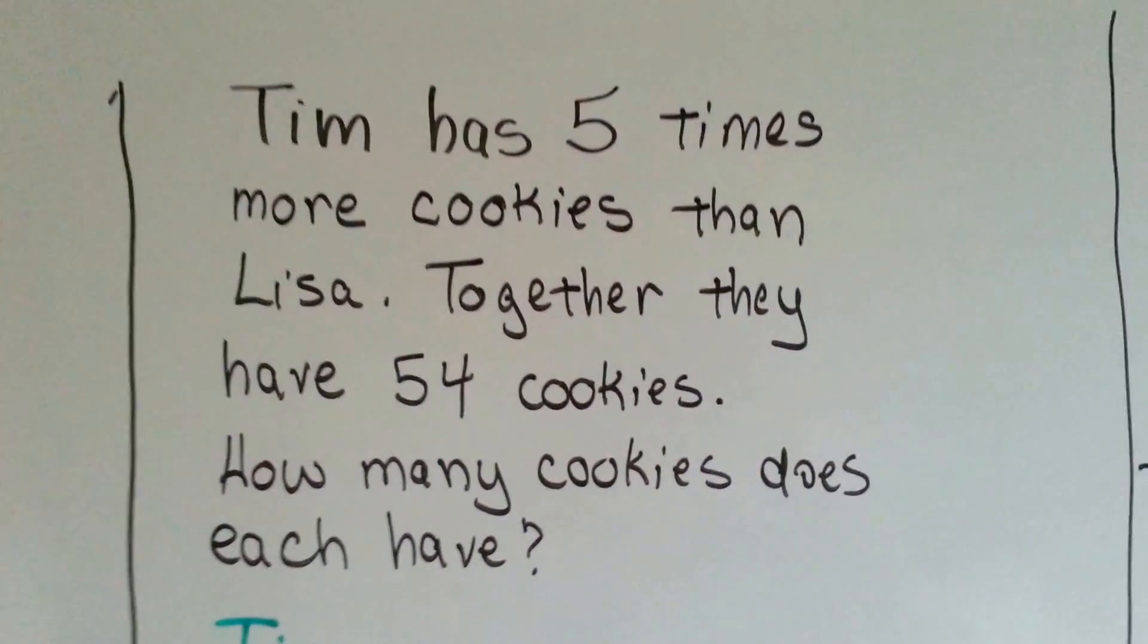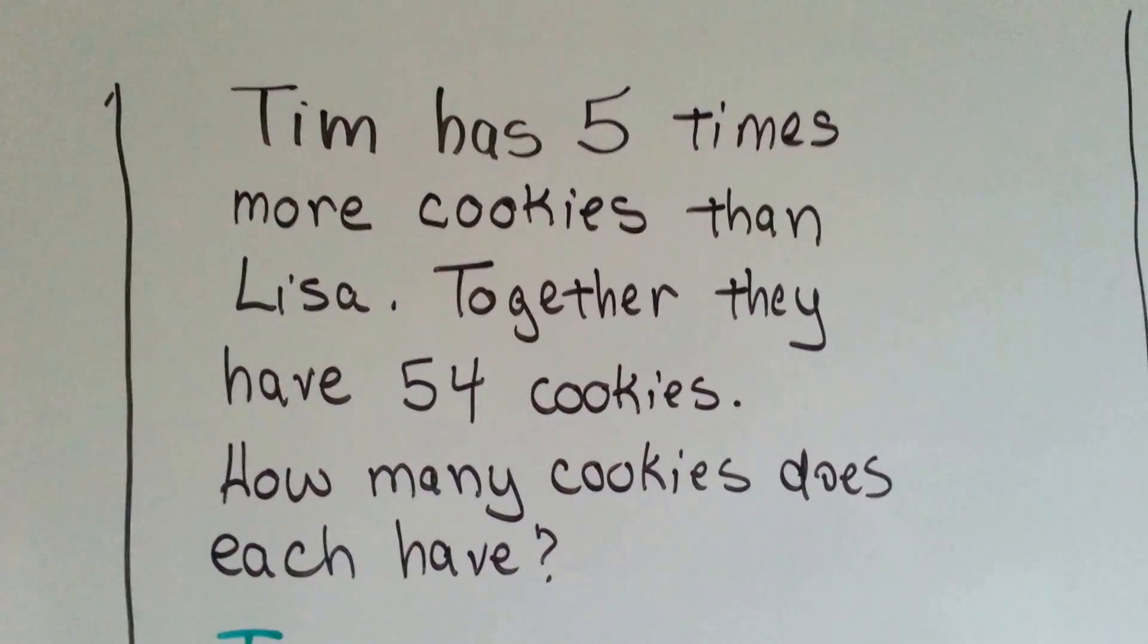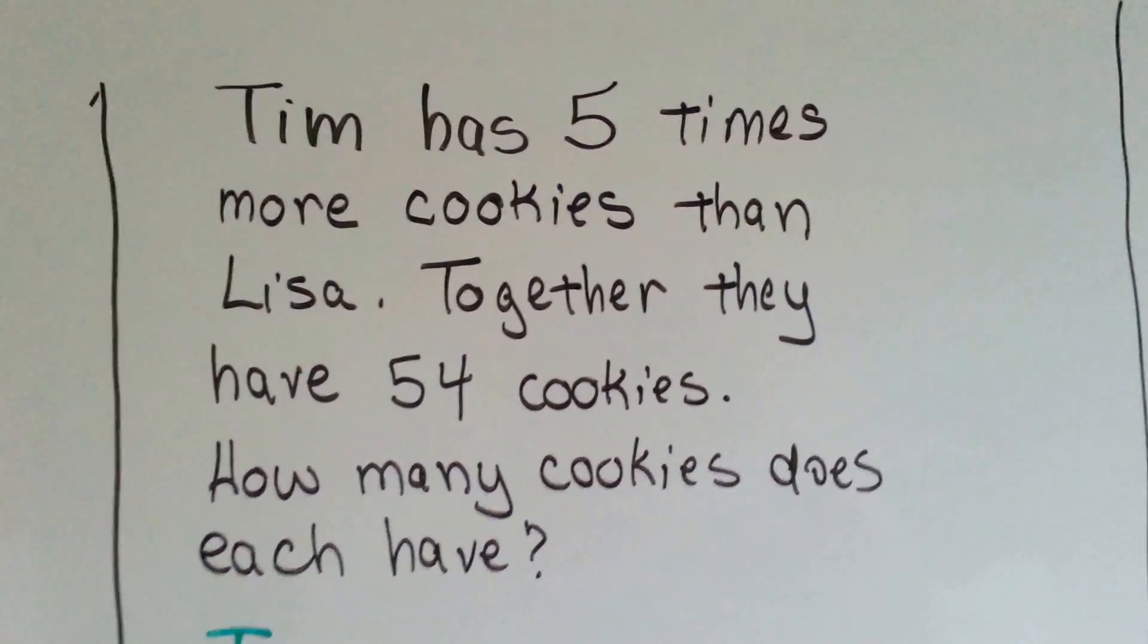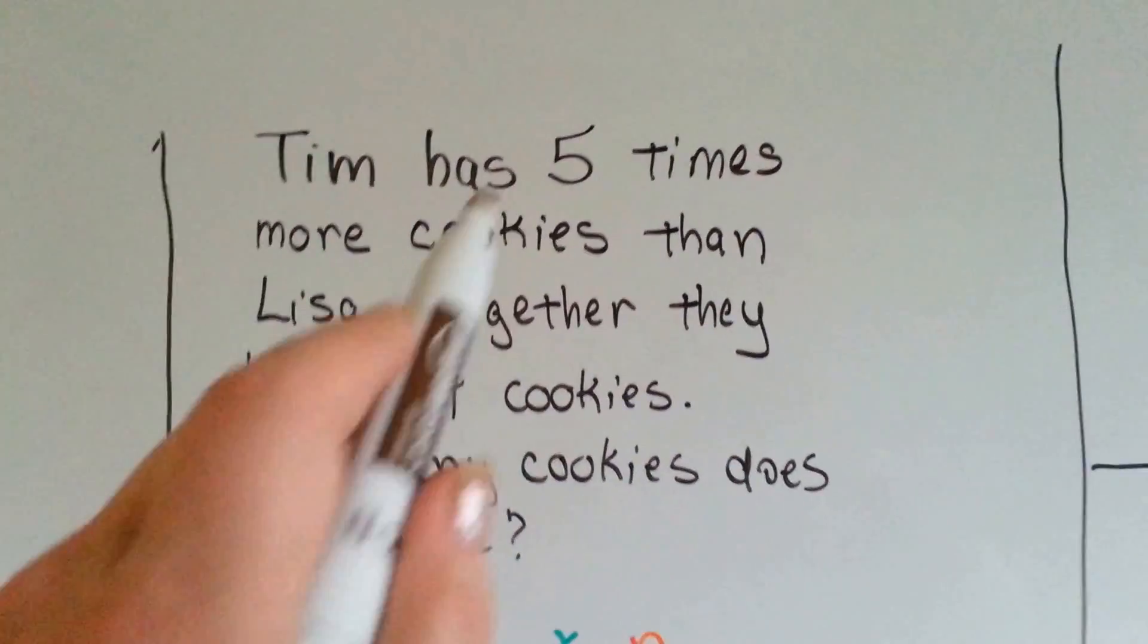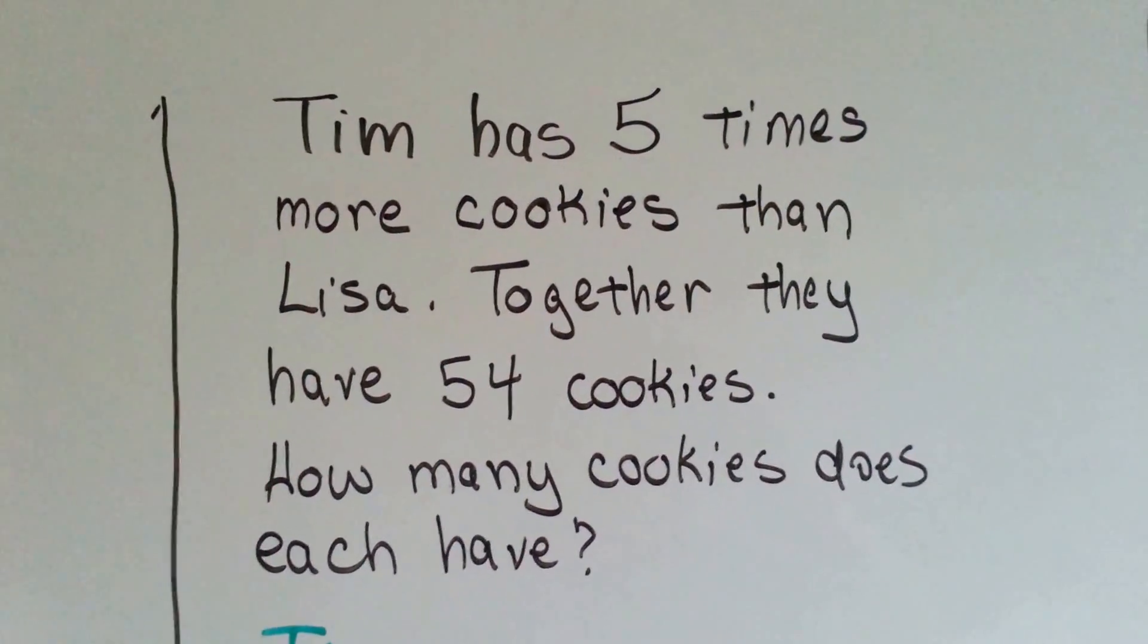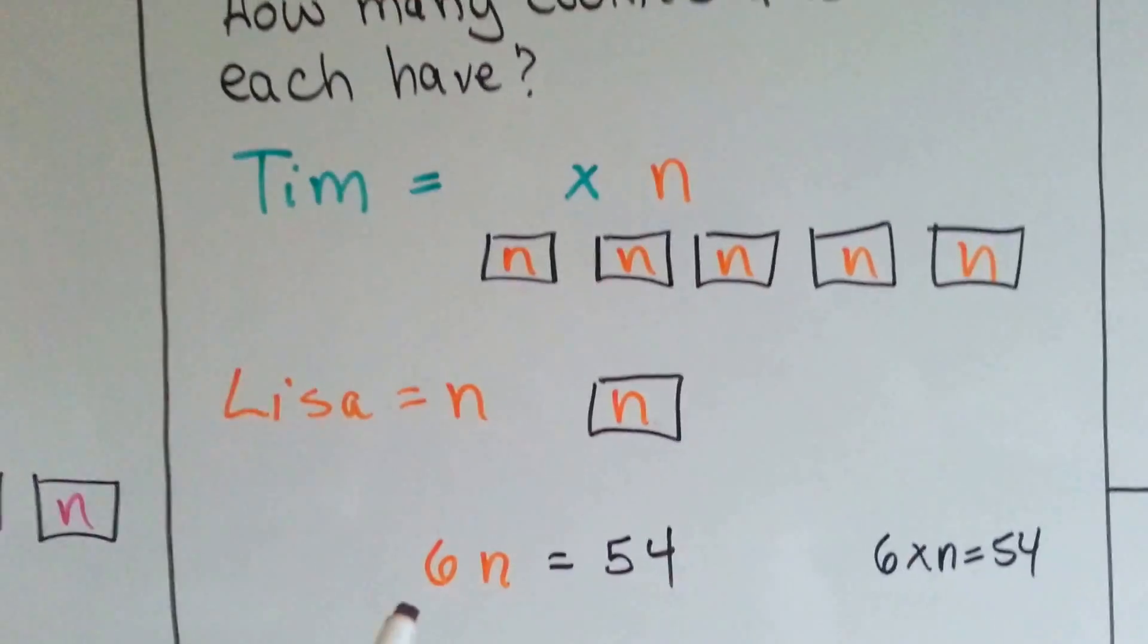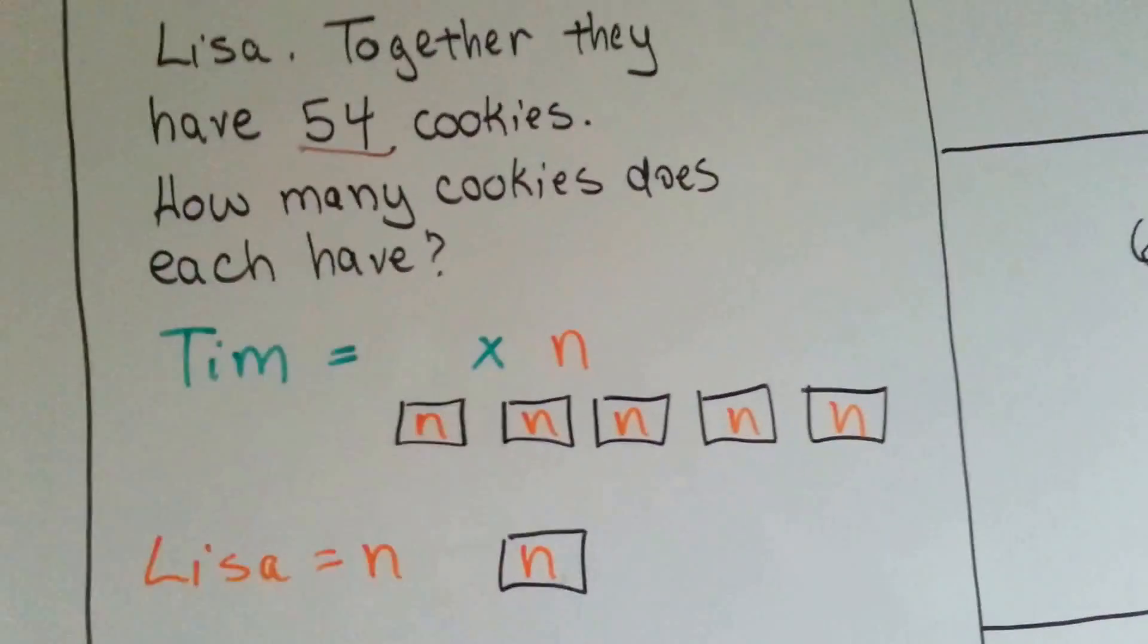Tim has five times more cookies than Lisa. Together they have fifty-four cookies. How many cookies does each have? So, Tim has five n's. Lisa has one n. Five and one is six. So, that's a total of six n is going to equal the fifty-four.